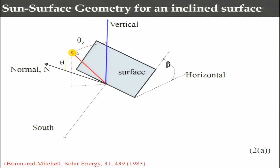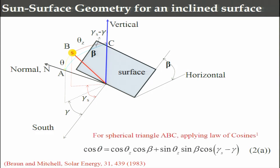The angle between the sun ray and the normal is theta. The angle between the projection of the sun ray on the horizontal and its angle with the south is called gamma_s. The surface azimuthal angle gamma is the angle of the surface's normal projection on the horizontal with respect to south. Based on these angles, you can define triangle ABC and by geometric equivalence the angle between BC and AB becomes gamma_s minus gamma. Applying the law of cosines gives: cos(theta) = cos(theta_z)cos(beta) + sin(theta_z)sin(beta)cos(gamma_s - gamma).